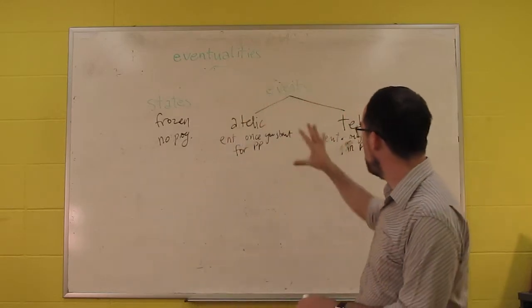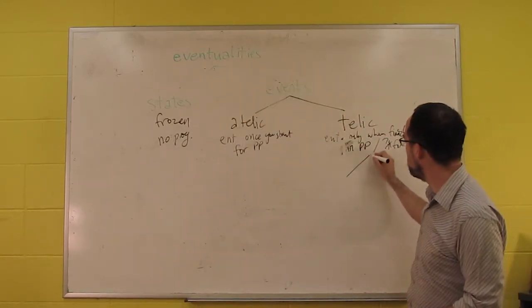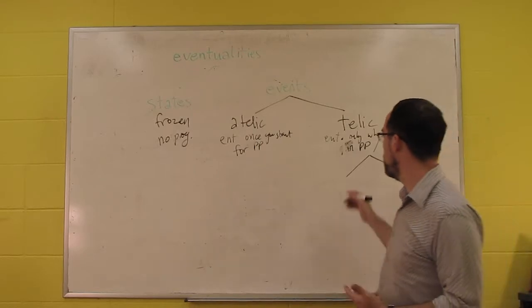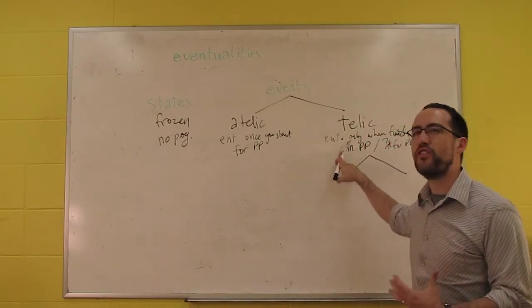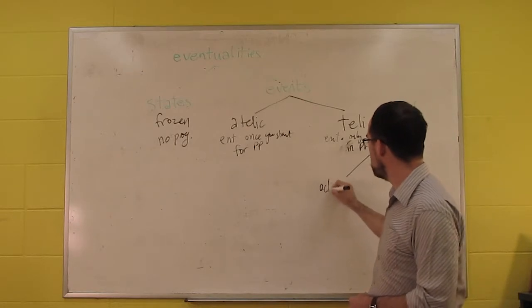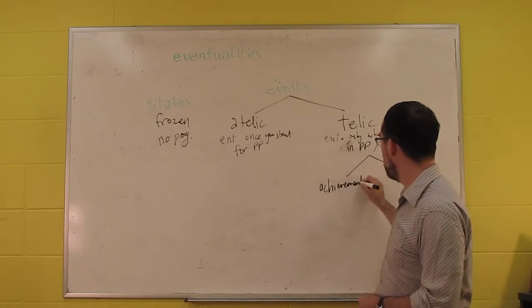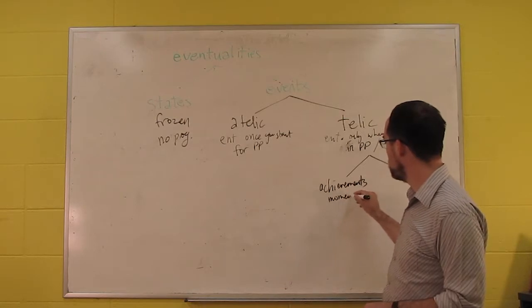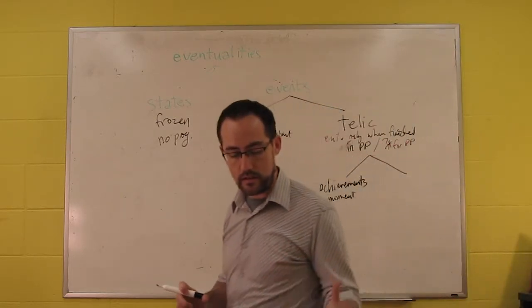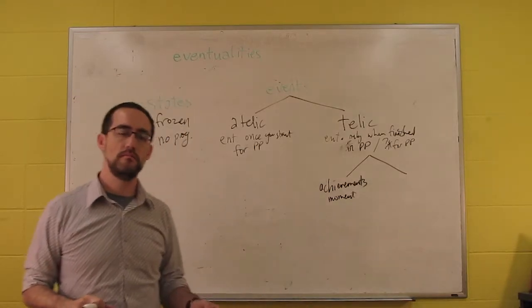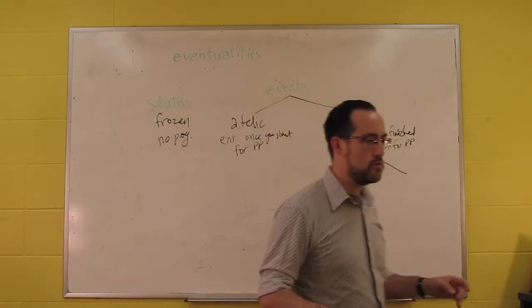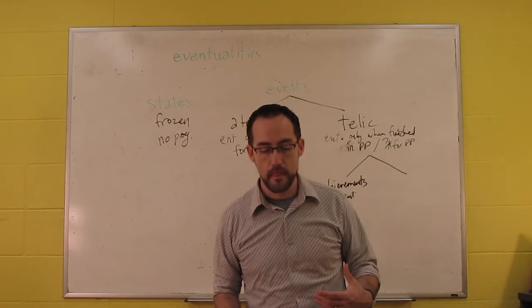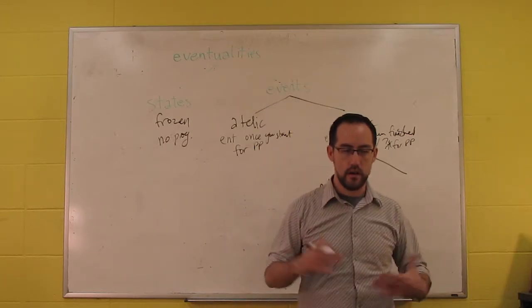So we can divide atelic and telic. But we can divide those further too. We can divide telics into achievements and accomplishments based on how long the actual event takes. Achievements are instantaneous. They happen in a moment. So a classic example is reach the top of the mountain. So you're climbing, you're climbing, whatever, and then you reach the top. That moment of reaching the top is an instant.